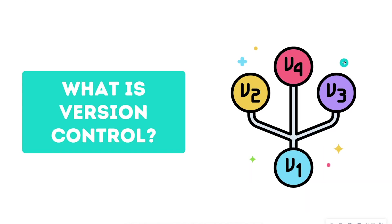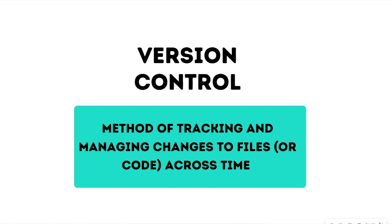So what exactly is version control? Version control is a method of tracking and managing changes to files or code across time. If you want to track the changes you make to code, a text file, a markdown file, or whatever it may be, you can utilize some type of version control. You may already use this in Google Docs, where you can go back to different versions of a document.